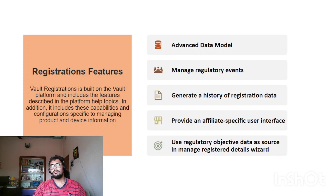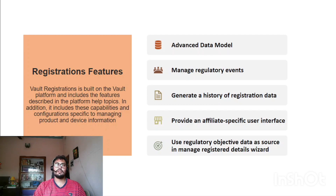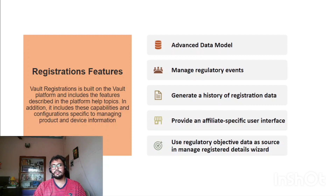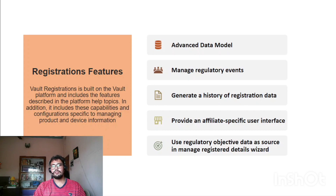It is called an advanced data model because the registration object contains events, activities, and registration objects, including several objects like event, activity, submission, regulatory objective, and application. The next feature is the ability to manage regulatory events, and another is generating a history of registration data and providing an affiliate-specific user interface — so affiliate users don't need to navigate each individual object, but can control event, activity, regulatory objective, and registration from a single page.